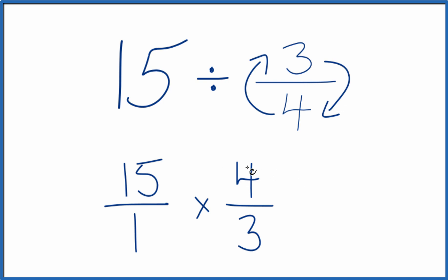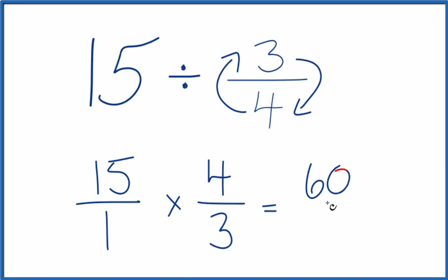Now with fractions, we just multiply the numerators and then the denominators. So 15 times 4, that would be 60. 1 times 3, that would be 3.